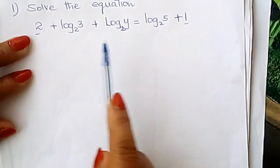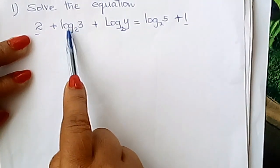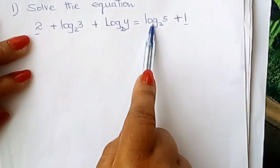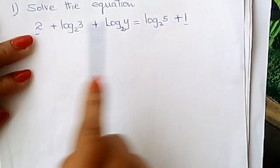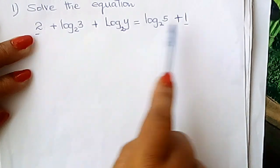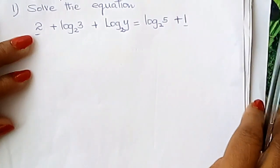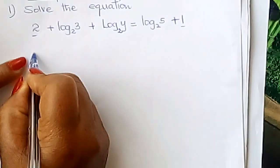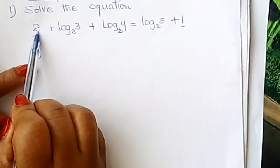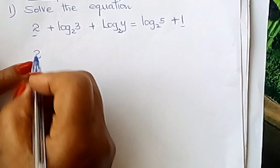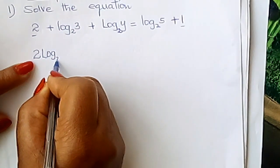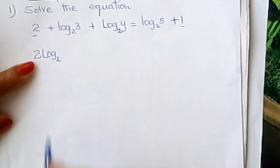So what you do is this: you look at the base. These are logs to base 2. So you introduce a log to base 2 here and to base 2 here. How do you write that? You write 2, then you write log to base 2. You write your base 2 here.